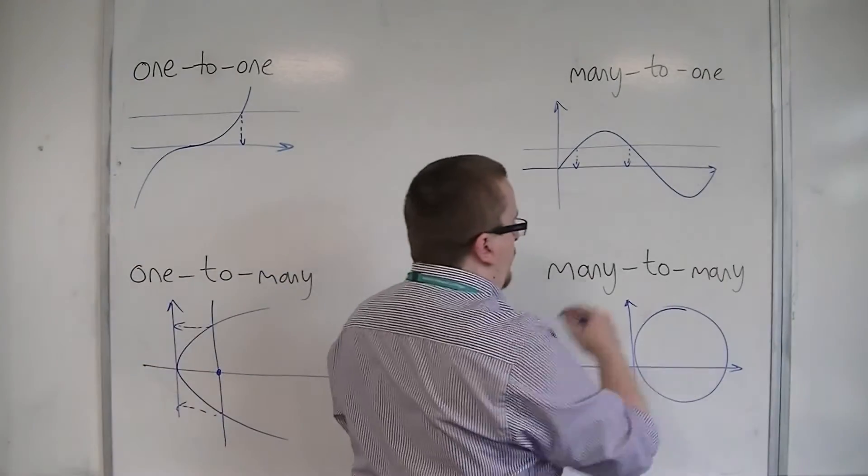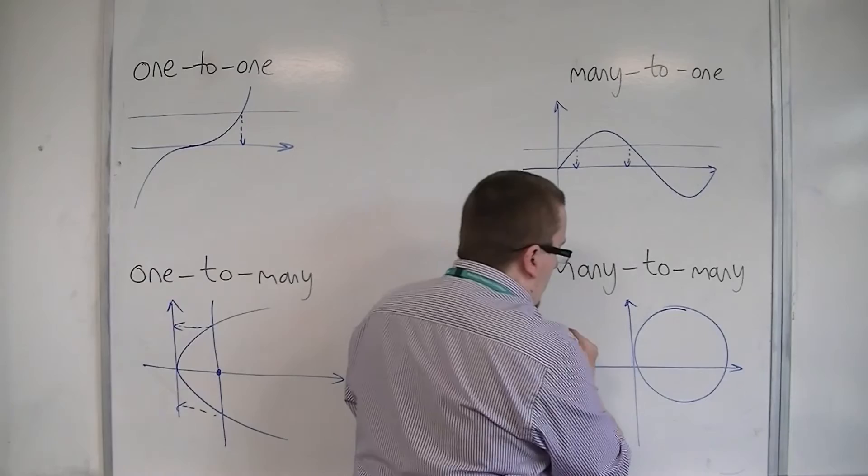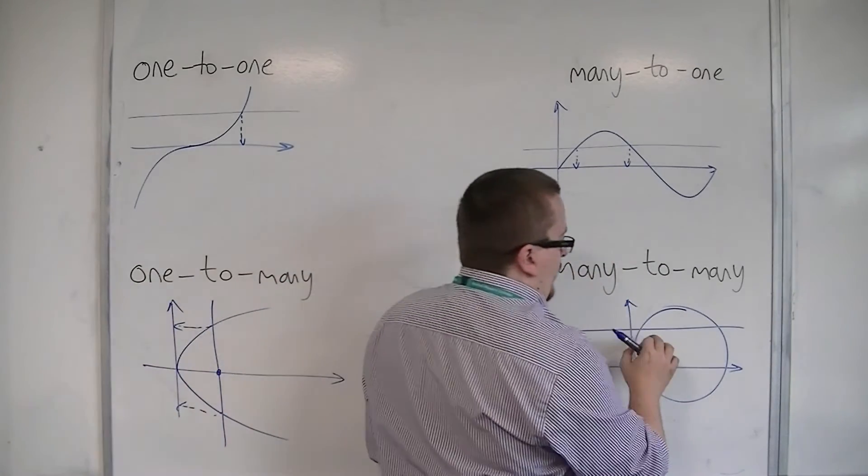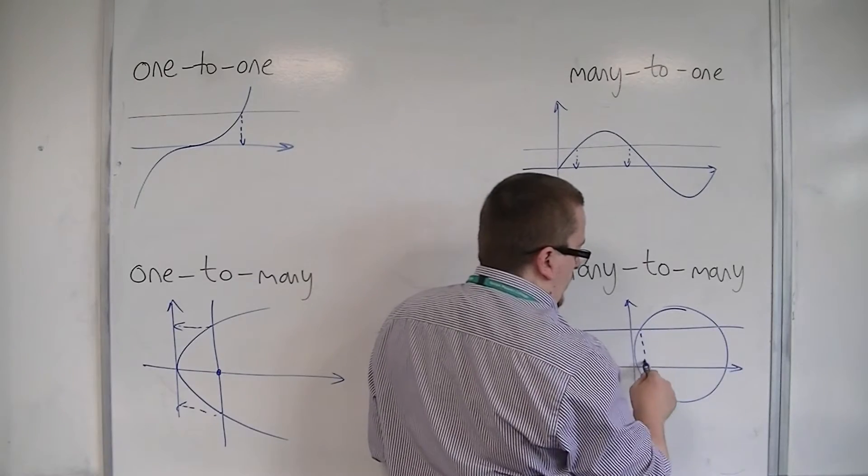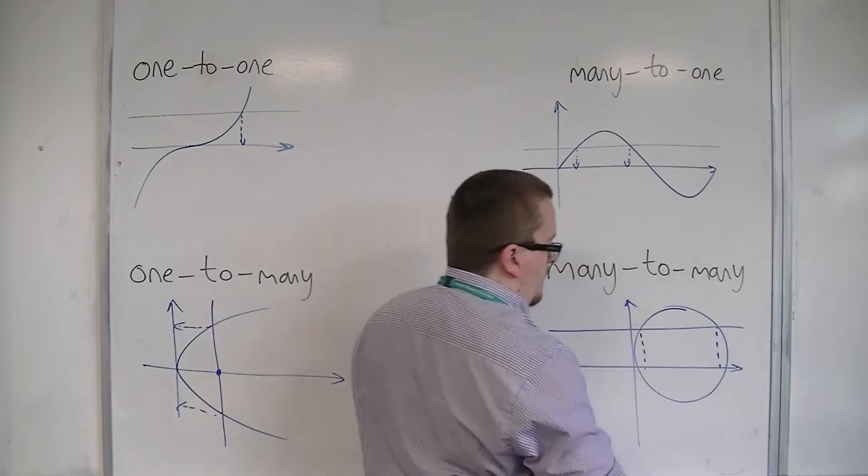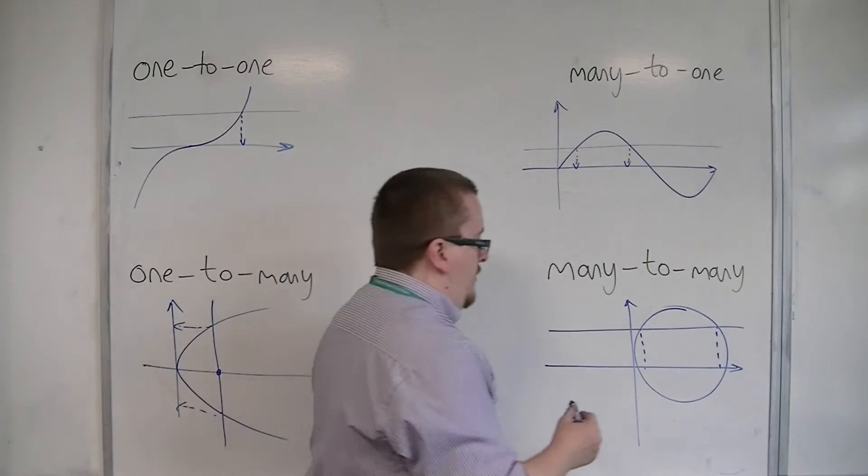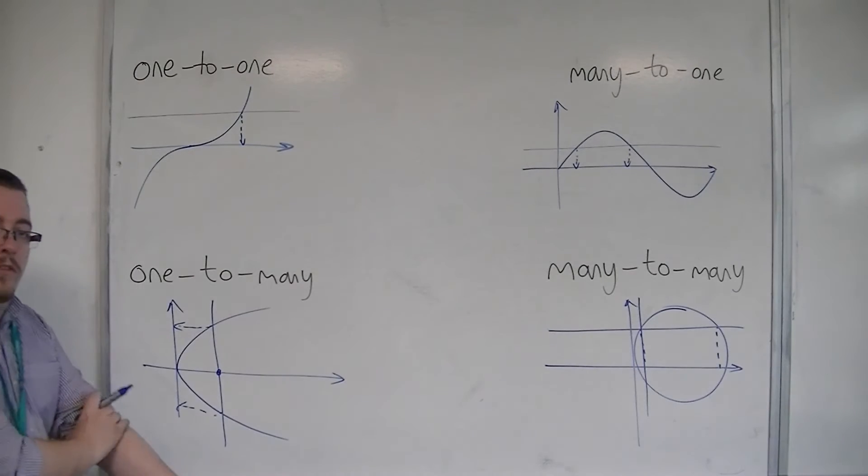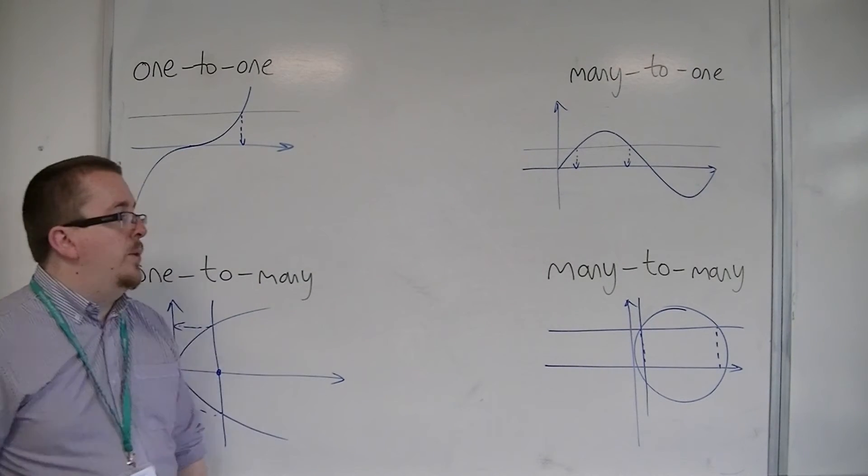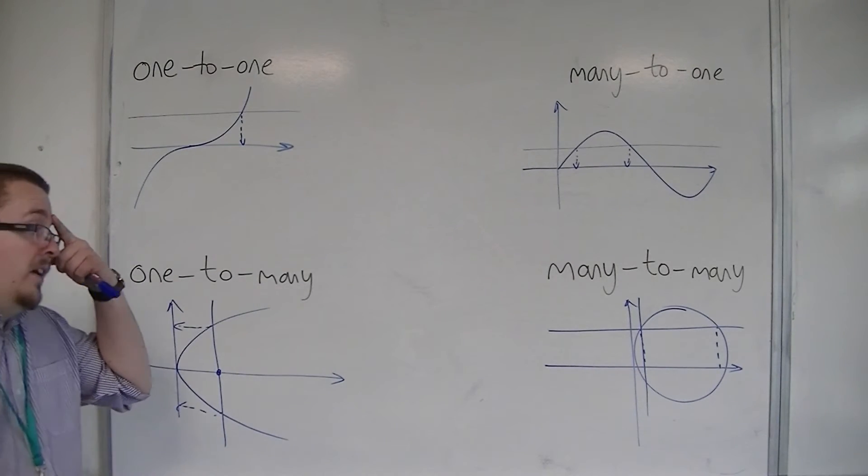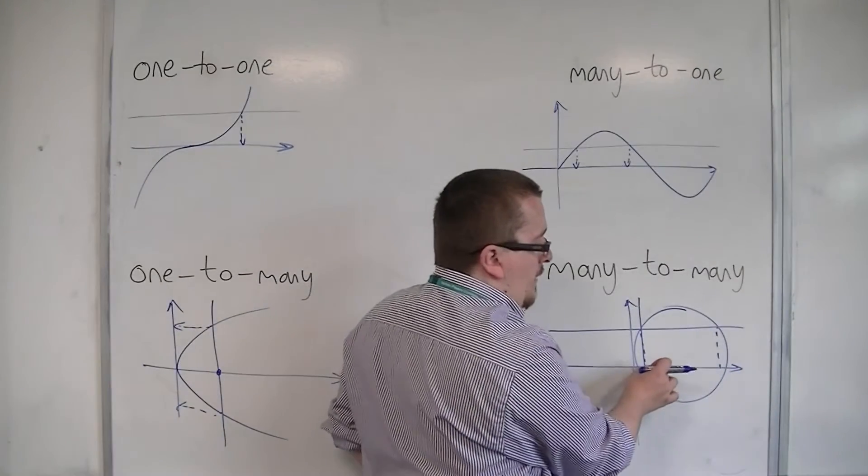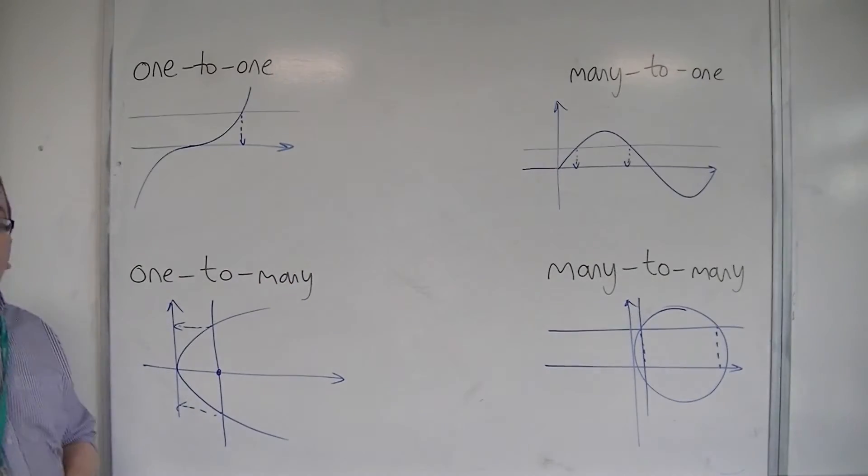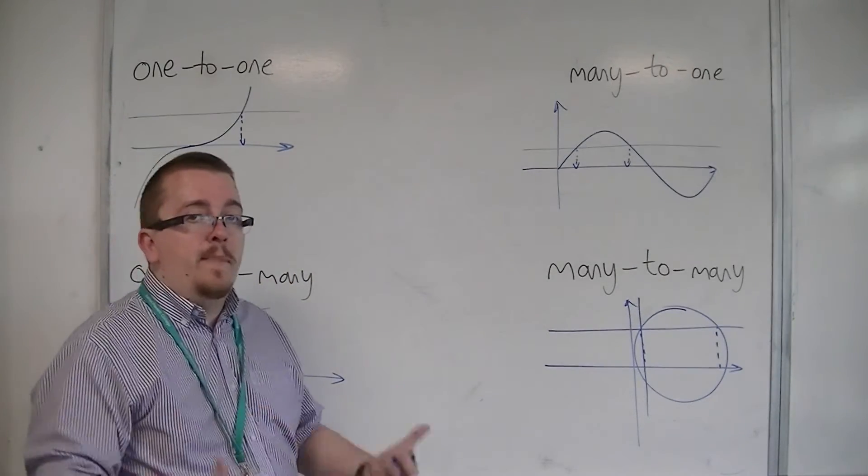So that if we're looking at a horizontal line to start off with, a horizontal line will get you many values of x. And a vertical line would get you many values of y for each value of x. And so, because you're getting more than one value of y for each x, and more than one value of x for each y, that is what we would consider as many to many.